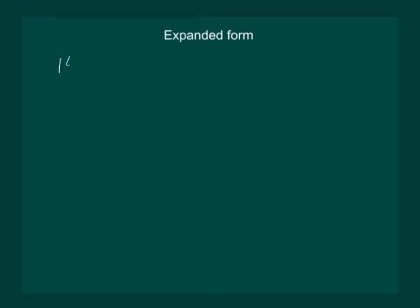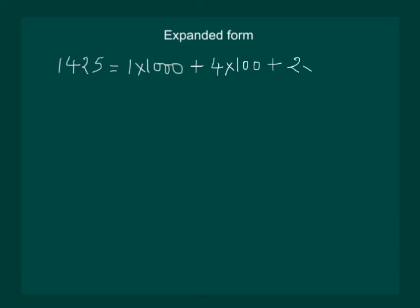We know that if we have a number 1425, that can be written as 1 into 1000, since 1 is in the thousandths place. Similarly, 4 into 100, as 4 is in the hundreds place, plus 2 into 10 plus 5 into 1.